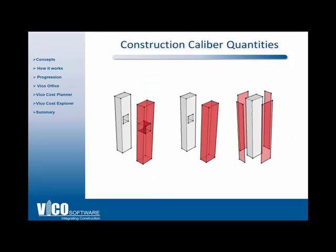Once you start adding more information to the model, that's when you can derive construction caliber quantities that are more accurate than just regular BIM quantities. BIM applications have to be programmed to calculate these accurate quantities, and VICO spent the last five years understanding the best way to calculate them. In this example you can see that for a column you can extract the gross volume, the net volume, and correctly calculated surface areas. As more detail becomes available and those massing elements and zones get replaced with accurate construction components, you can replace your assumptions with real quantities from the model and track the changes in design and cost against your initial assumption.